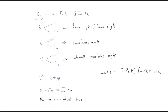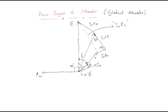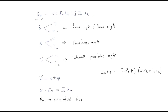Psi generally equals delta plus or minus phi. For a lagging power factor — inductive load — the armature current is less than V; for a leading power factor, it is more than V. The internal power factor angle psi is plus for lagging power factor and minus for leading power factor.